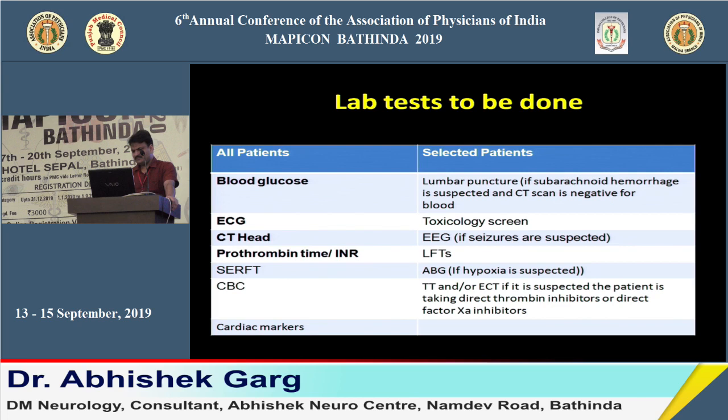Additional tests are done in specific scenarios. If a patient presents with seizure at onset, EEG is requested. If there is severe headache with doubt of subarachnoid hemorrhage and CT shows no blood, lumbar puncture is done. In general, the three most important immediate tests are sugar, ECG, and CT.